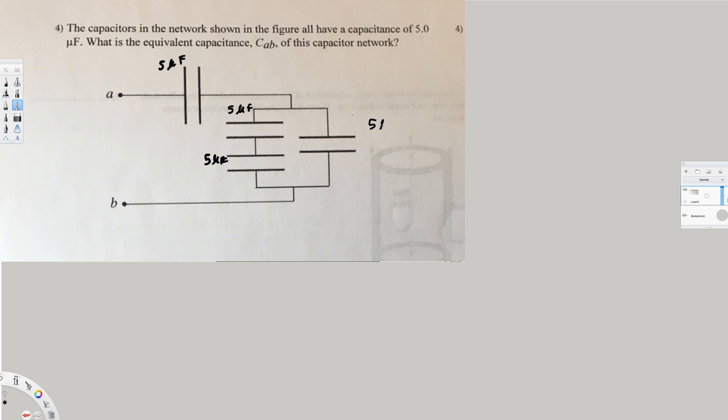and 5 microfarads. First, we can combine this series together. To add capacitors in series, we use 1 over C. Let's say this is 1, 2, 3, 4.